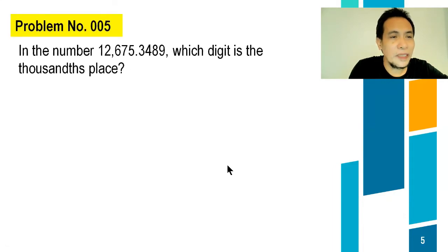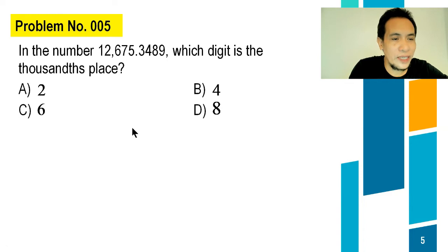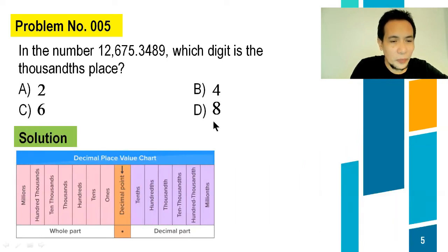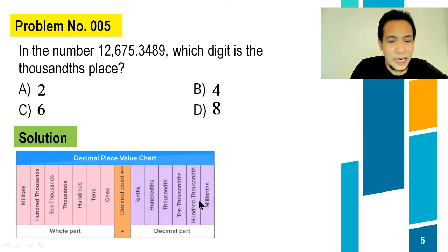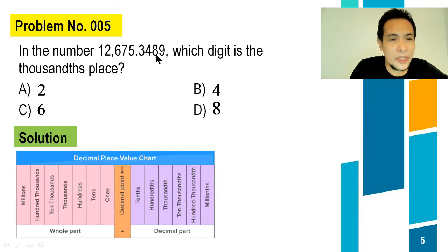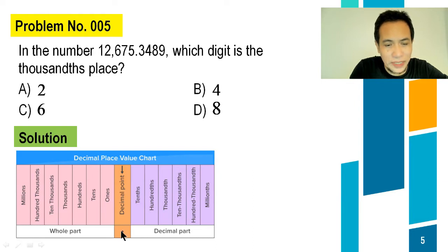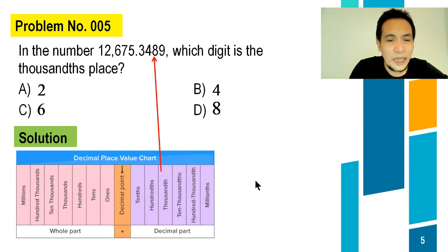Problem number 005: In the number 12,675.3489, which digit is in the thousandths place? Choices: A, 2; B, 4; C, 6; D, 8. For the solution, we use the decimal place value chart. To the right of the decimal point is the decimal part. From the decimal point, the first digit is tenths, second is hundredths, third is thousandths. So counting three digits to the right gives us 8, but the thousandths digit is 4. The correct answer is letter B.